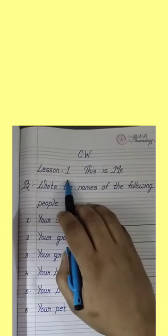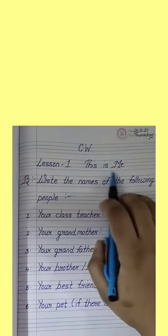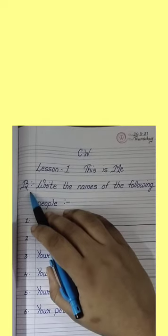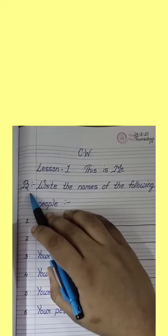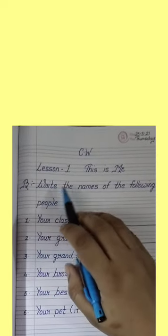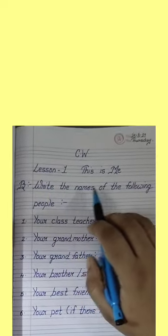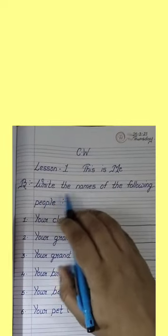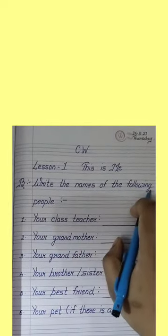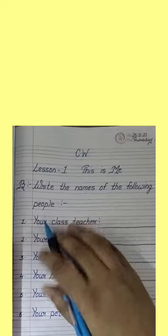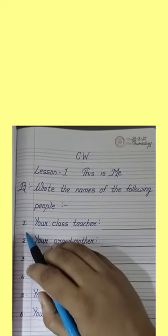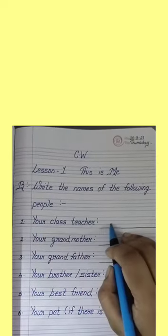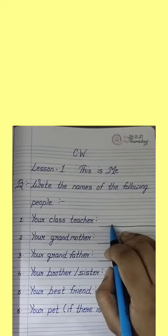This is lesson number one, fourth exercise — exercise B: Write the names of the following people. Number one: your class teacher. You have to write your class teacher's name here.